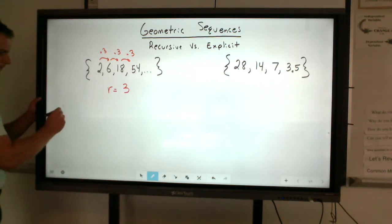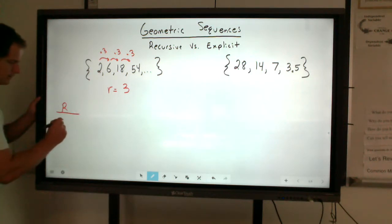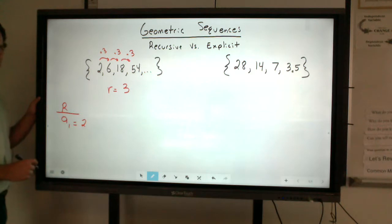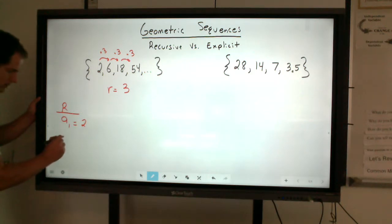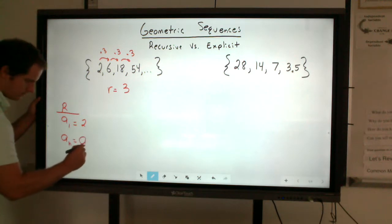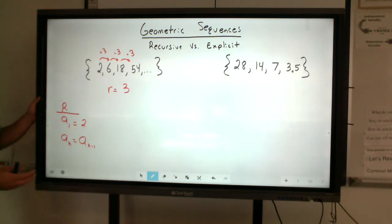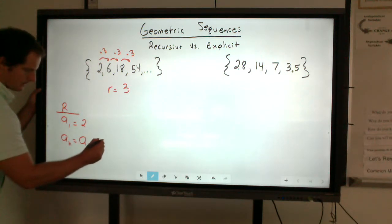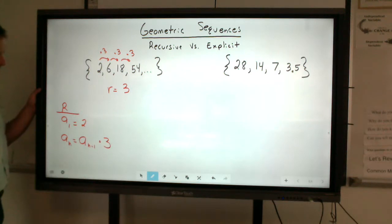To write the recursive rule for this, it's the same thing, or a similar setup to arithmetic. We first want to identify the first term, which in this sequence is 2. And then to identify any nth term, we do a sub n equals the previous term, which is a sub n minus 1, times or multiplied by that common ratio. In this case, our common ratio is 3.